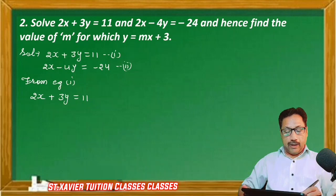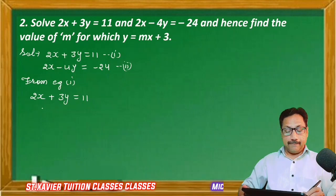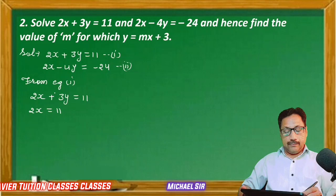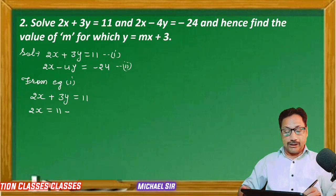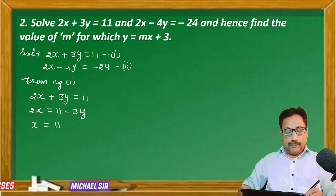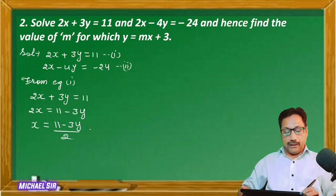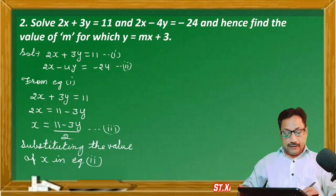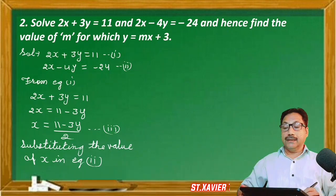Now we will send 3y to the right-hand side. So 2x = 11 - 3y. When we send it to the right-hand side, it becomes minus. So x = (11 - 3y) / 2. This is the value of x — we will call this the third equation. We will put the value of x into the second equation — substituting the value of x in equation second.